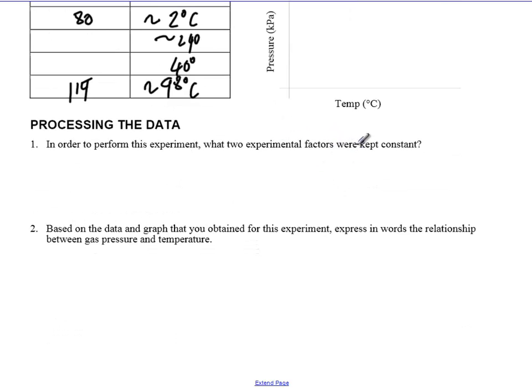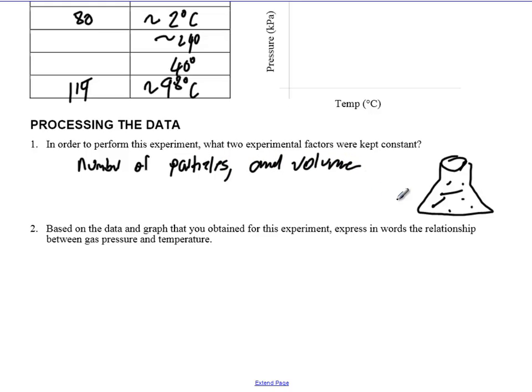In order to perform this experiment, what two experimental factors were kept constant? Remember, when you started this whole experiment, you put a little stopper in the flask and you closed it, which means whatever's in here stays in here, but nothing else gets in here. So the number of particles, number of particles, as well as the volume. And by that I mean this beaker, this flask didn't get smaller or bigger. The gas particles had to occupy the same amount of space. So number of particles and volume of gas stayed the same.